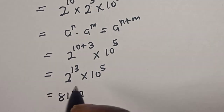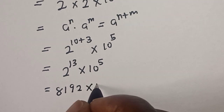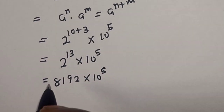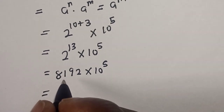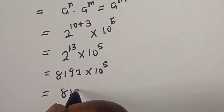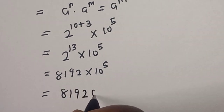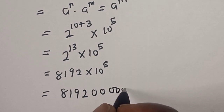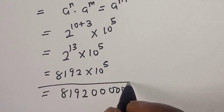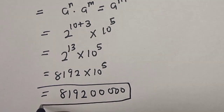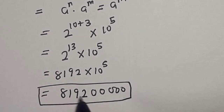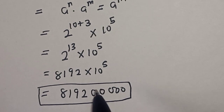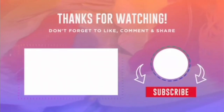And 2 raised to power 13 is 8192. So our final answer is 8192 times 10 to the power of 5, which is 819,200,000. That is our final answer. If you enjoyed the class, please don't forget to like, share, comment and subscribe. Thank you.